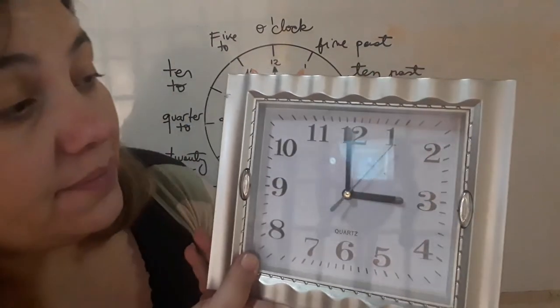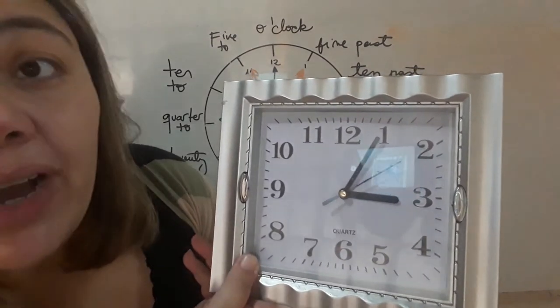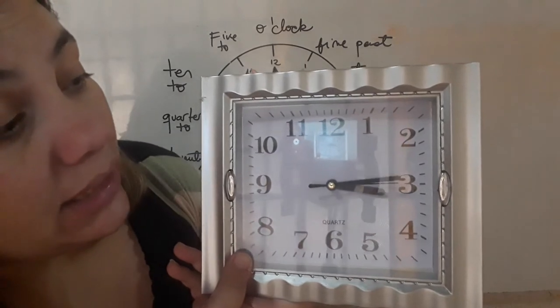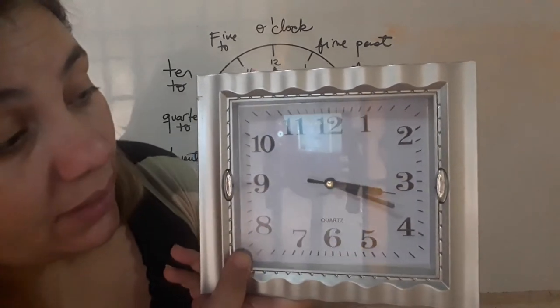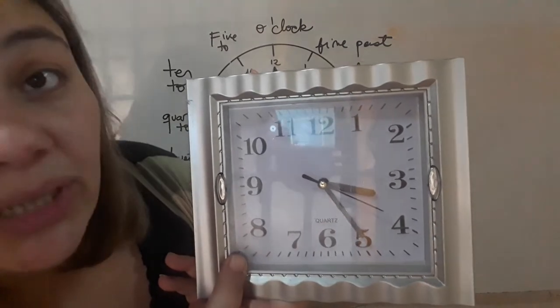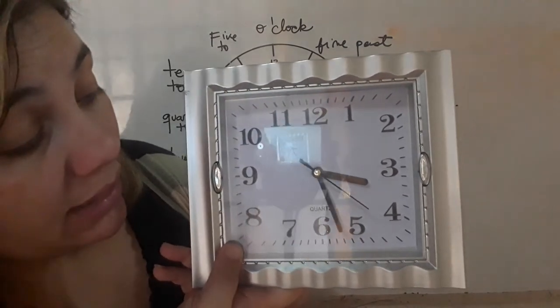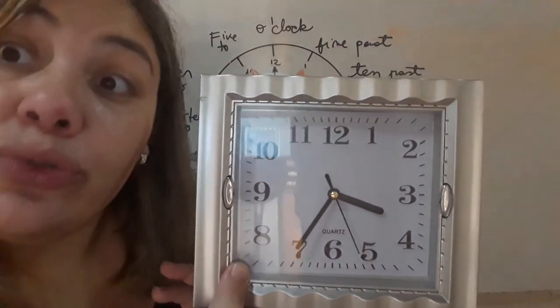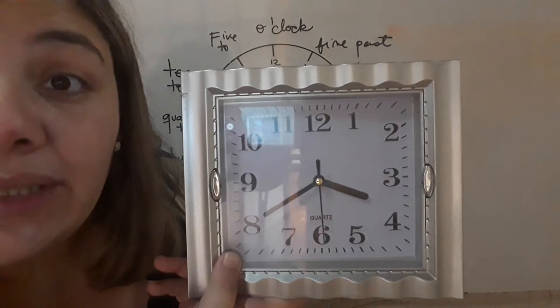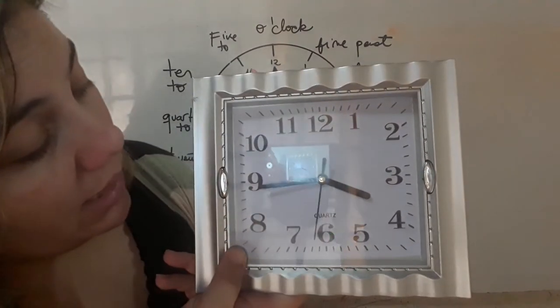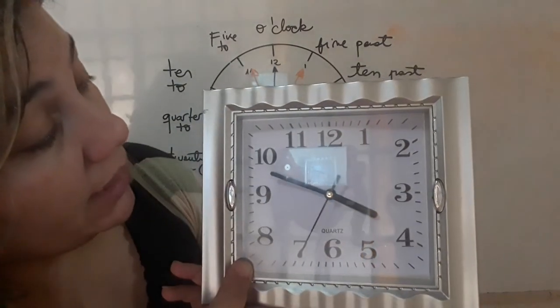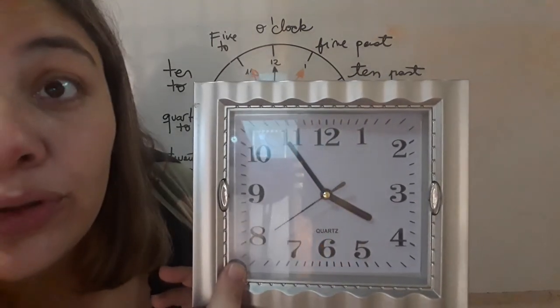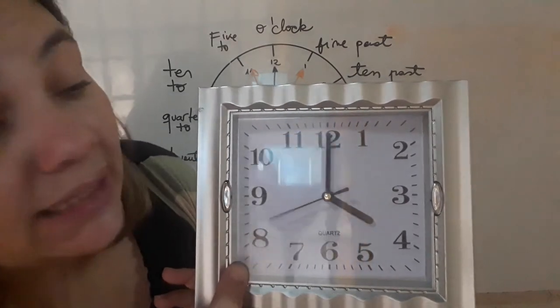So, it is three o clock. And then, five past three. Then, ten past three. Then, a quarter past three. Twenty past three. Twenty-five past three. It is half past three. It is twenty-five to four. It is twenty to four. It is a quarter to four. It is ten to four. It is five to four. And it is four o clock.